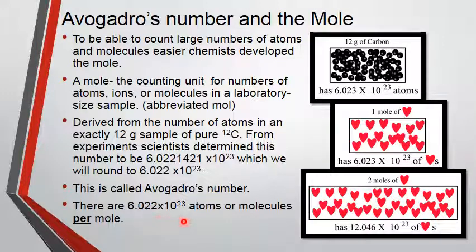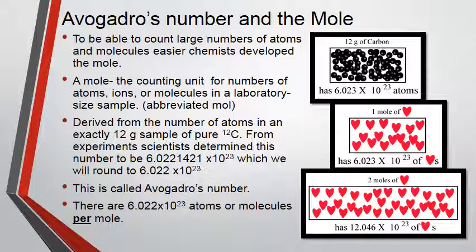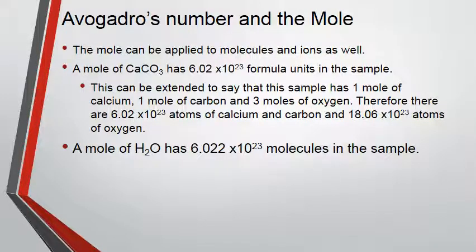A mole refers to the number of atoms or molecules in a sample. The pictures on the side give you an idea of how this works. If we have 12 grams of carbon, we have 6.022×10²³ atoms. A mole of anything — even paper hearts — is 6.022×10²³ of those things. If we have two moles of something, we just multiply: 12.046×10²³ is the same as two moles. We can use that relationship to find how many atoms or molecules there are.